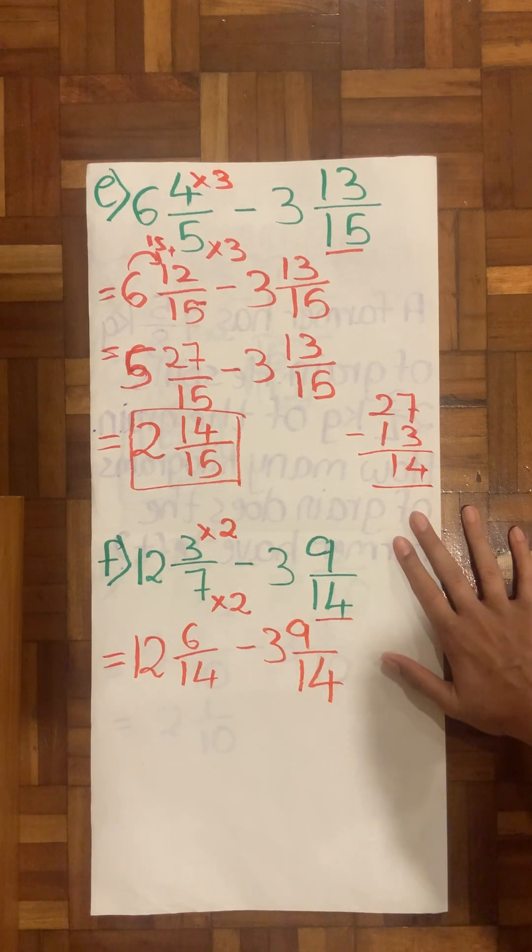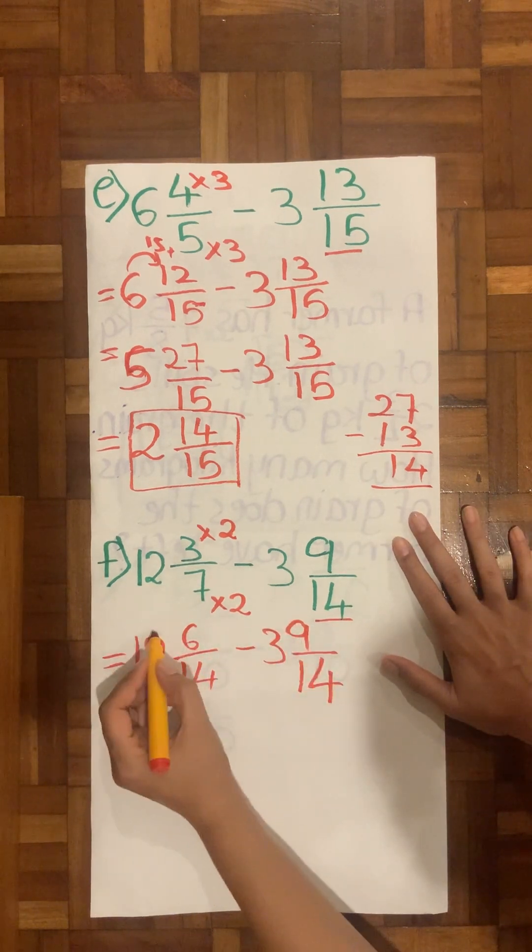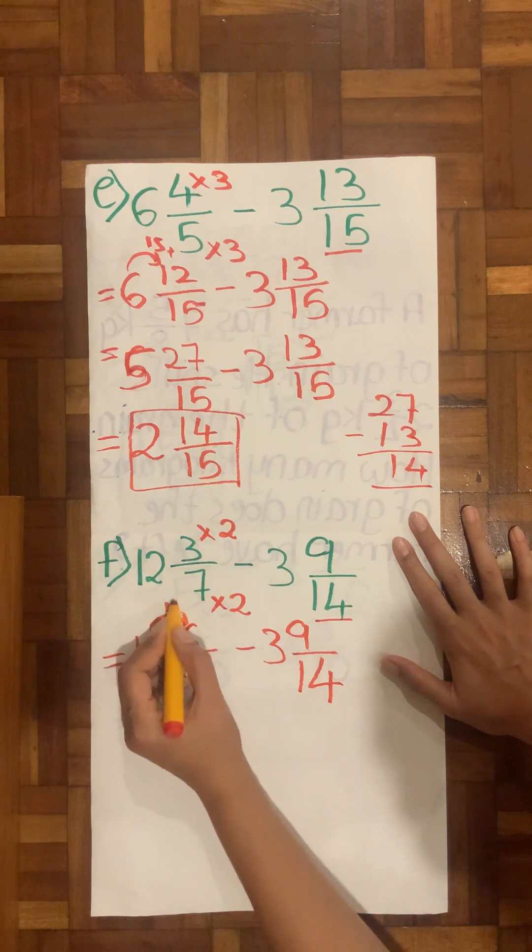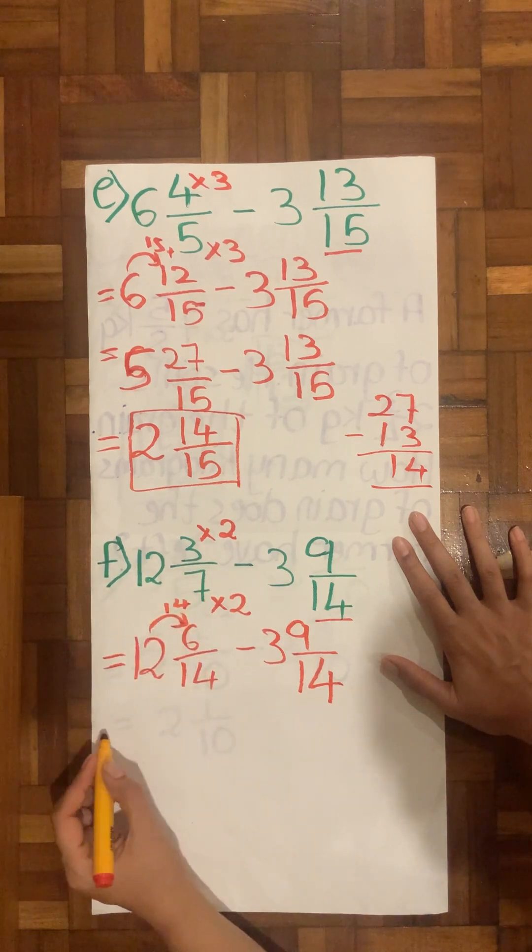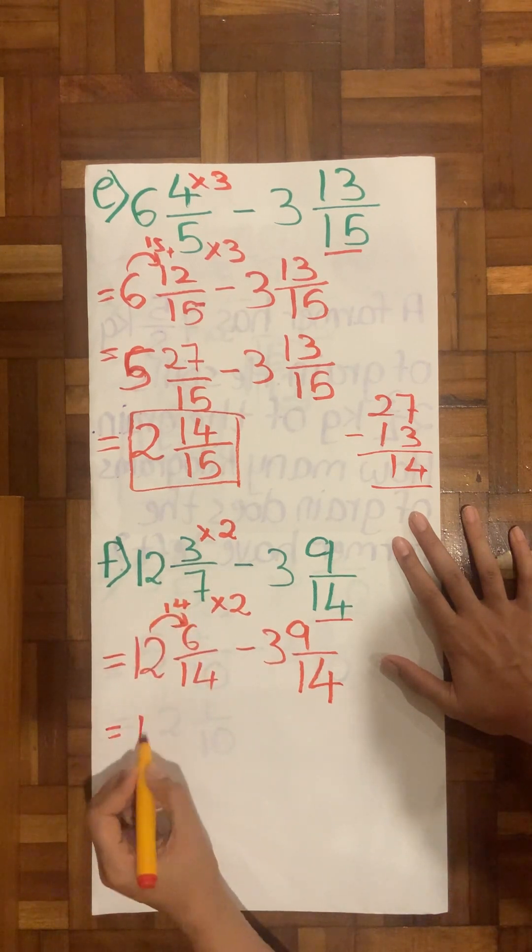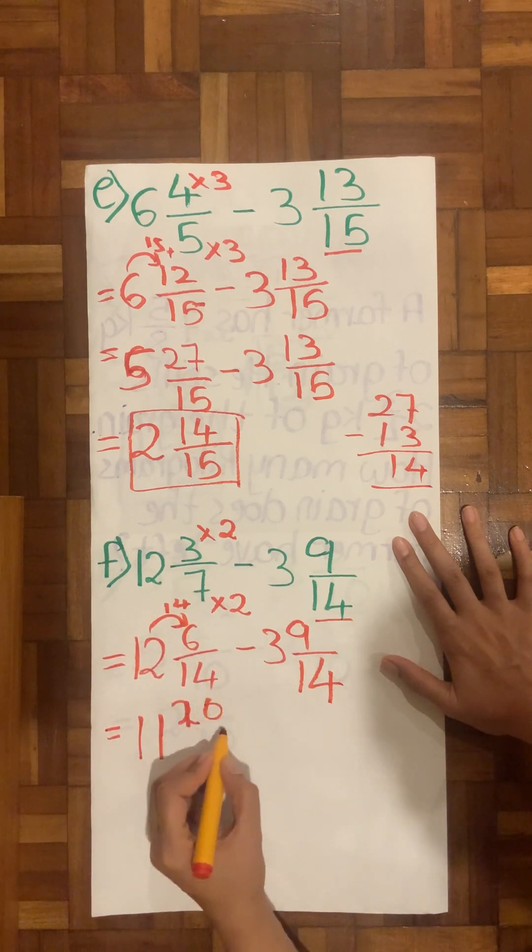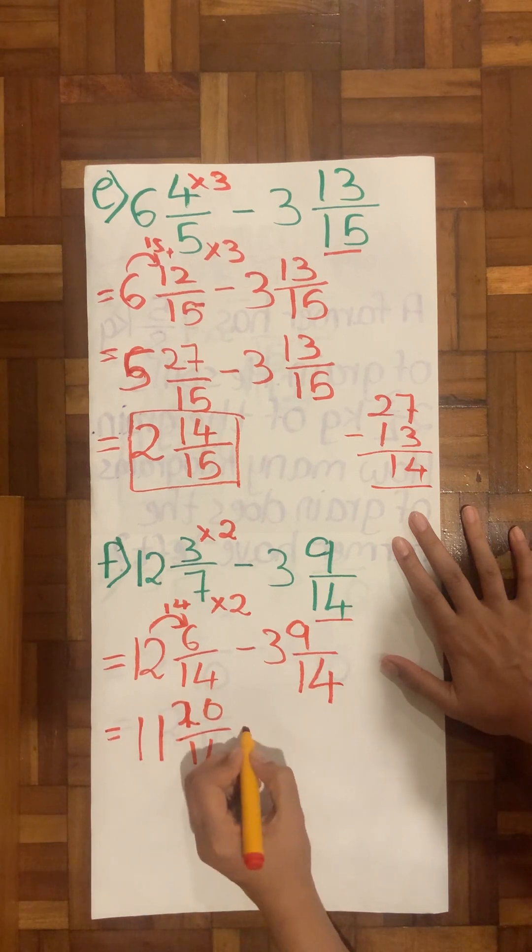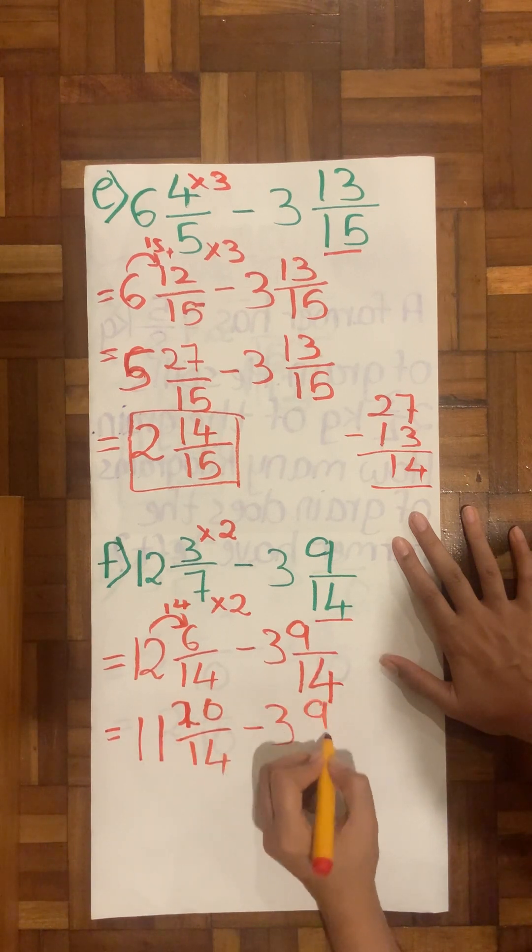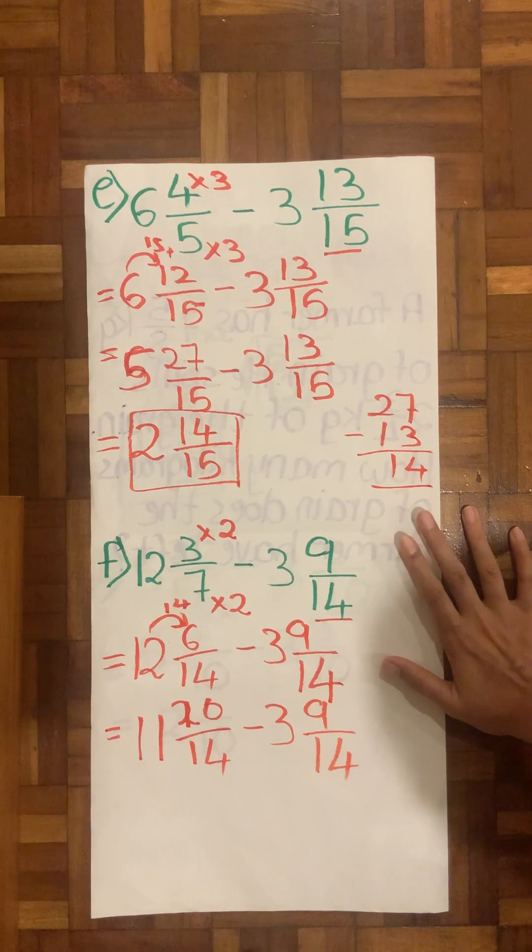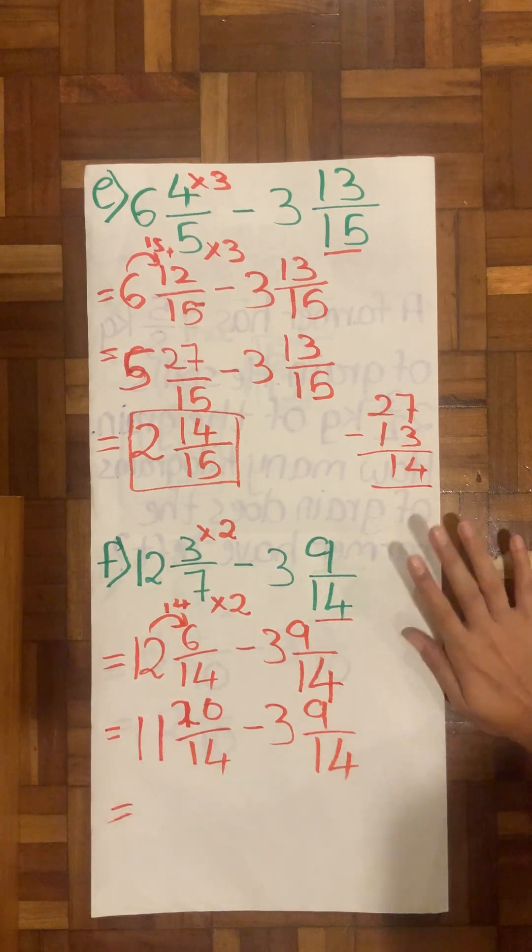So let's open it further or simplify it. So 12 wholes, 3 times 2 is 6 over 14 minus 3, ⁹⁄₁₄. Now we know 6 cannot minus 9. I will give off 1 of the 14, as my denominator is 14 this time. This becomes 11. So 14 plus 6 is 20 over 14 minus 3 wholes ⁹⁄₁₄.